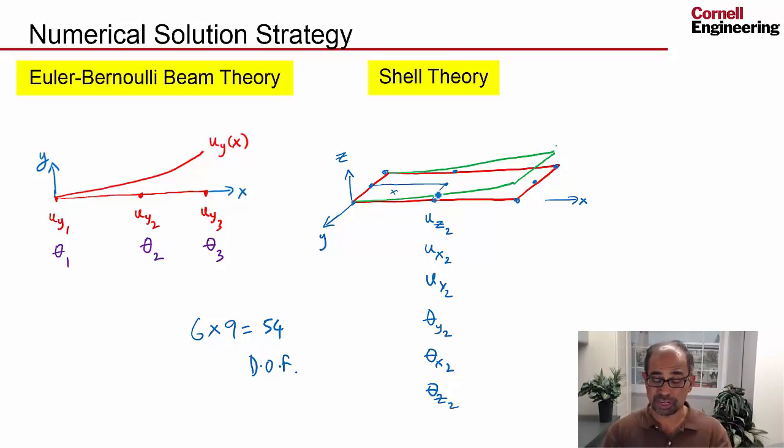So the deformed shape would be constructed in terms of four interpolations here because we have four elements. So the problem reduces to determining these values, these 54 values, such that the potential energy of the beam is minimized, but also the essential or the displacement boundary conditions or displacement rotation boundary conditions are satisfied. Let's take a look at that next.